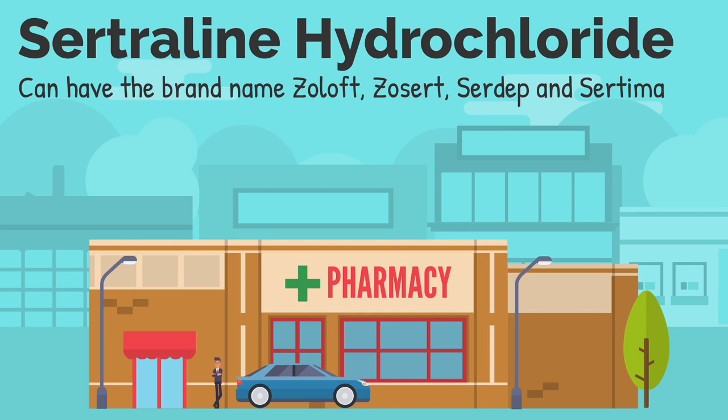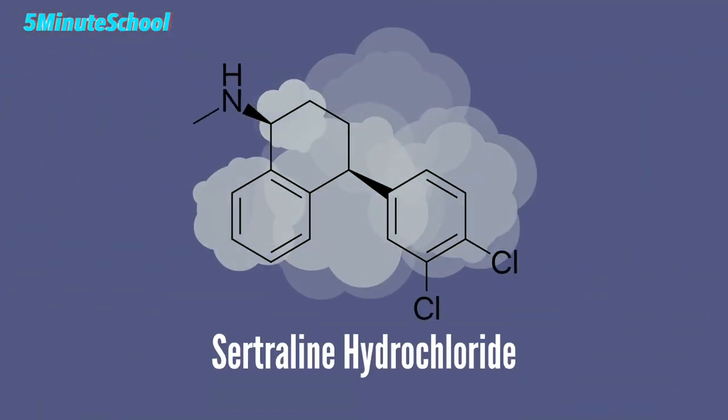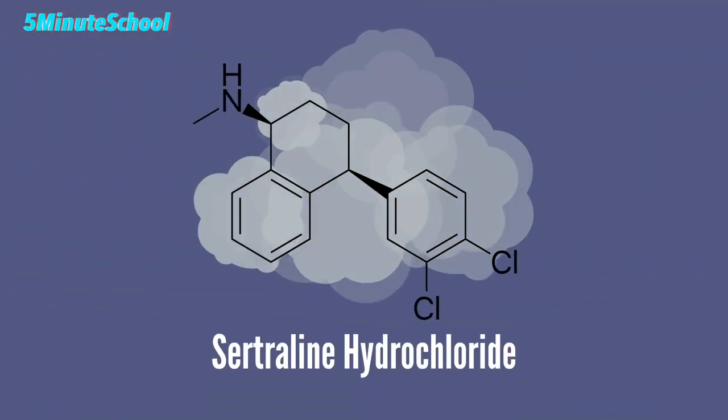Sertraline often comes in dosages of 50mg or 100mg, and here is the chemical structure of sertraline hydrochloride.